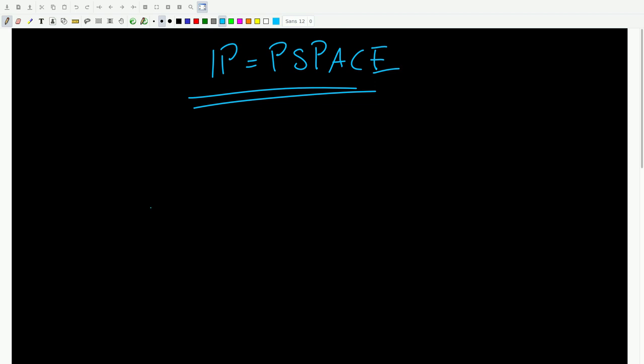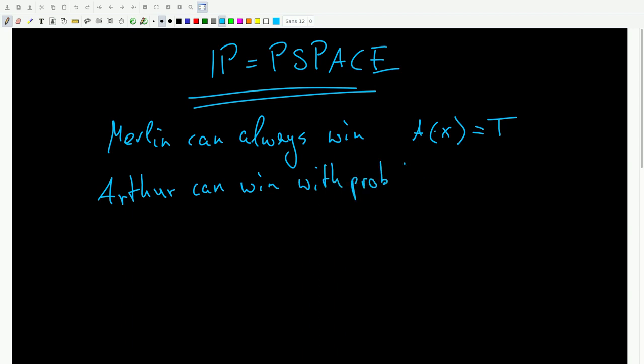With all that in mind, let me finally actually give a definition of IP, which is that IP is the set of problems such that A is in IP if there exists an Arthur-Merlin game bounded by a polynomial number of turns such that Merlin can always win if this claim is true.